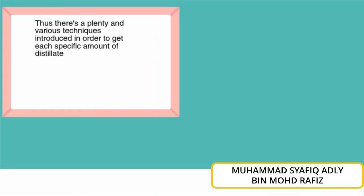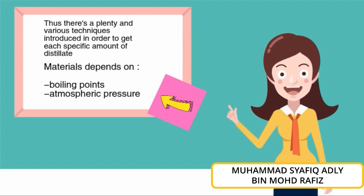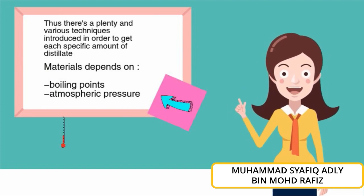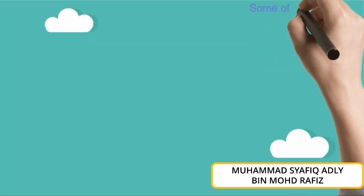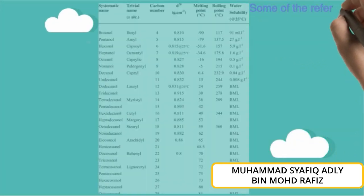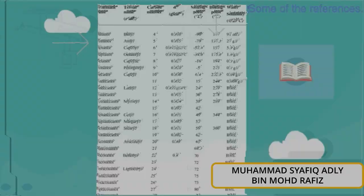There are a variety of techniques that have been introduced, and these techniques are mostly aimed towards controlling atmospheric temperature. For example, if the company wants to extract panthenol, they need to heat the materials to below 137.5 degrees Celsius.